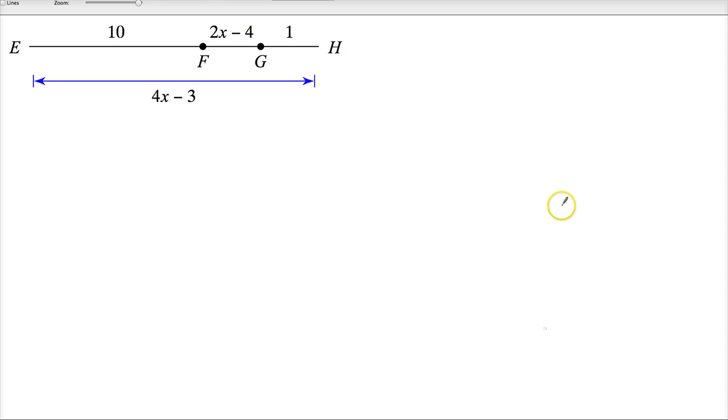Now, the thing is that they tell you, essentially without saying it, that EH, which is the total term, is equal to 4x minus 3. But it's easier if you just pick the entire section and write down the parts.